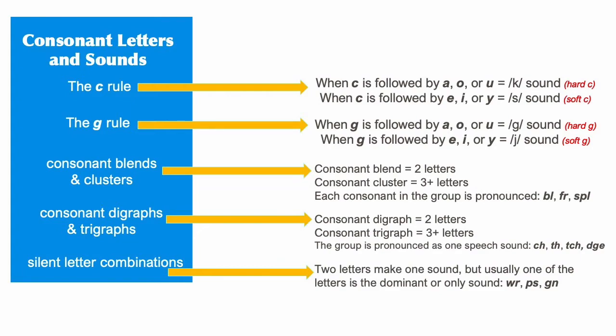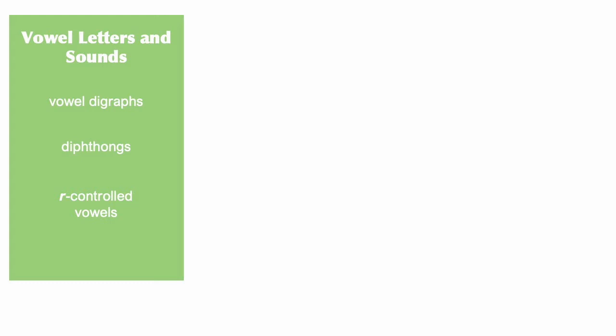Finally for this group, there are the silent letter combinations. This is when two letters make one sound, but one of the letters is the dominant or only sound. For example, the sound that the WR combination makes is really just an R sound. Now let's look at the vowels.